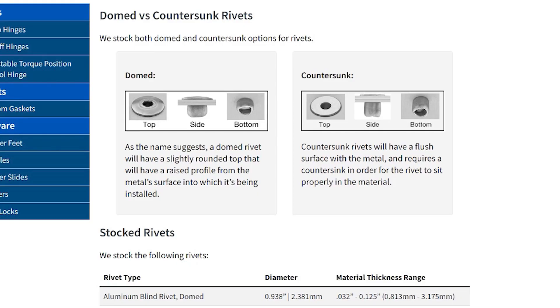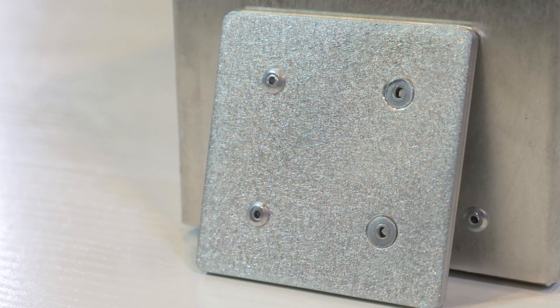We stock both domed and countersunk rivet options. Domed rivets have a slightly rounded top that will have a raised profile from the metal surface. Countersunk rivets are similar to other countersunk flathead fasteners that we offer in that the rivet will have a flush surface with the metal. The hole that the rivet is being installed into will need to be countersunk before the rivet can be installed.